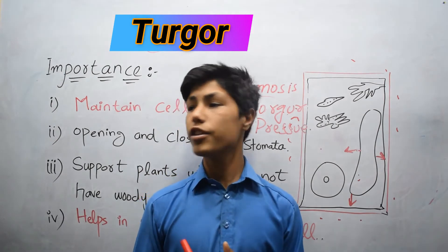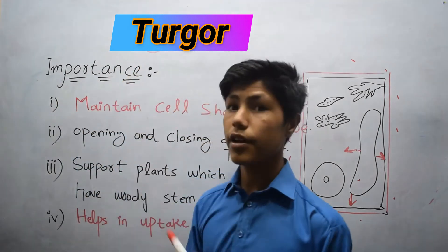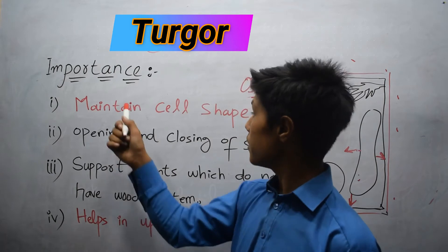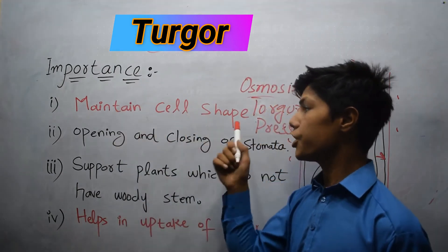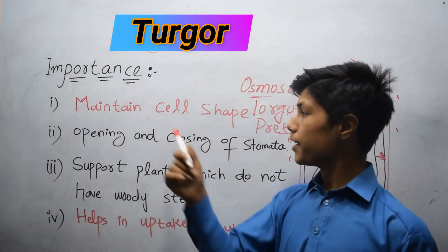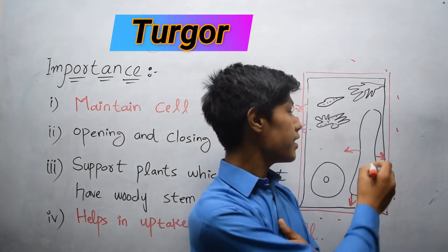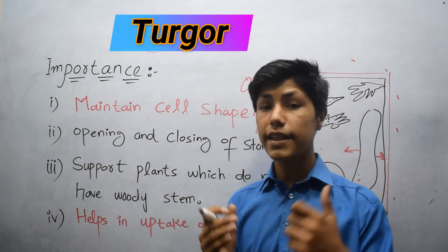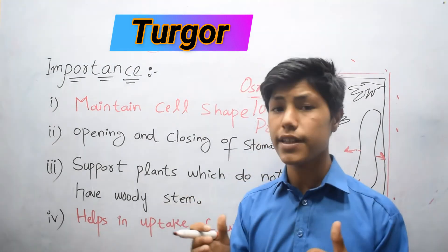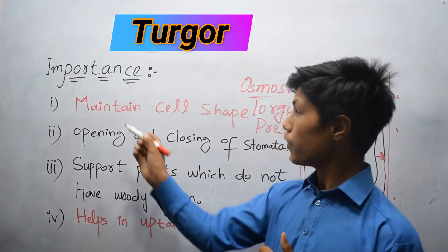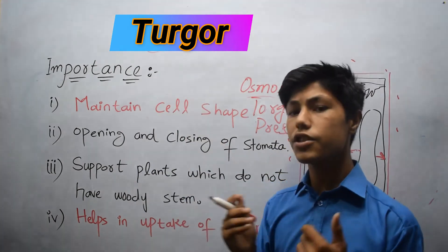If we count the importance of turgor pressure, the first one is maintain the cell shape. If the water is not present in the vacuole, the cell can squeeze. So it helps to maintain the cell shape.